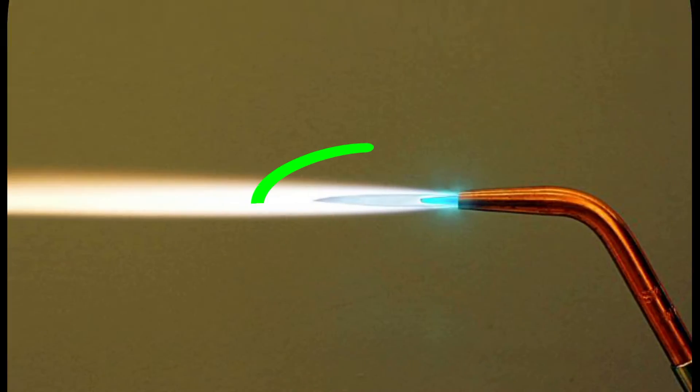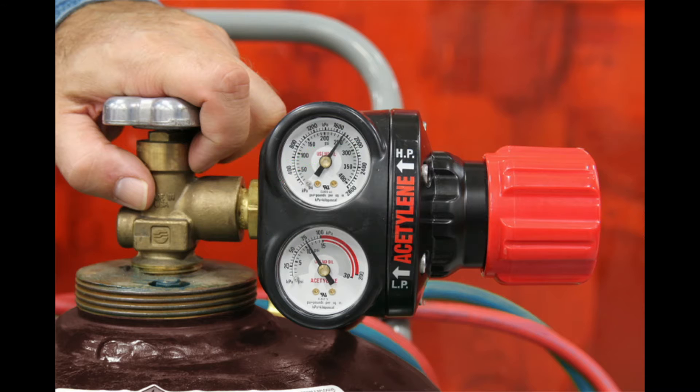In the flame cone, a partial combustion of acetylene takes place with the oxygen supplied from the cylinder.